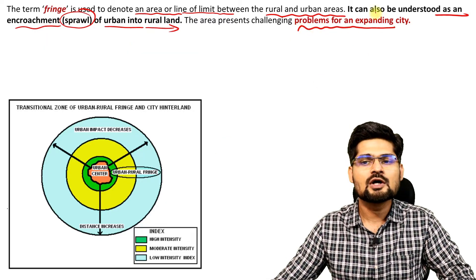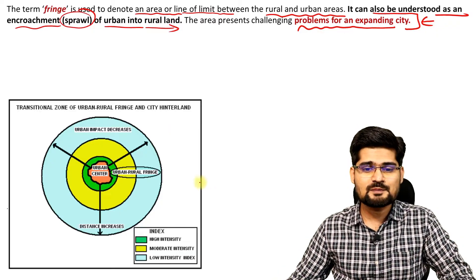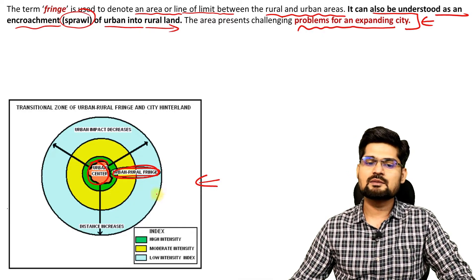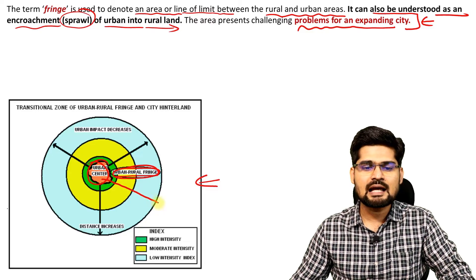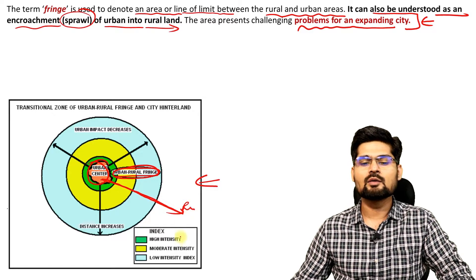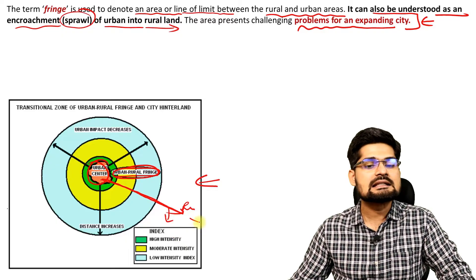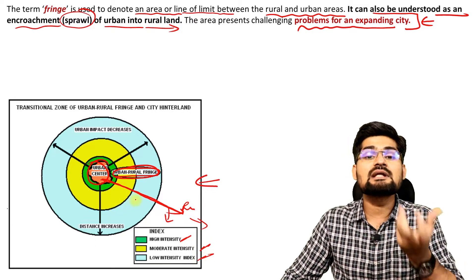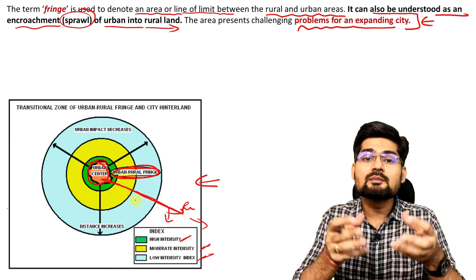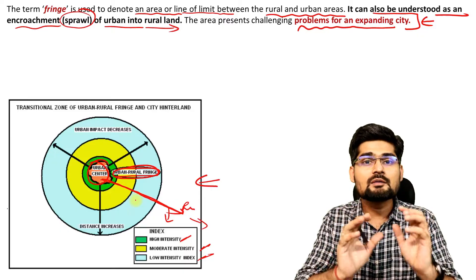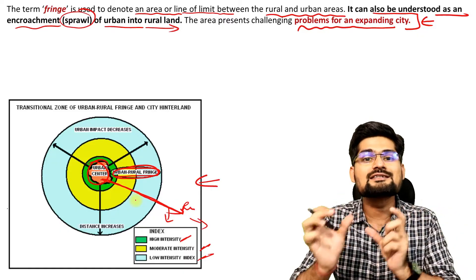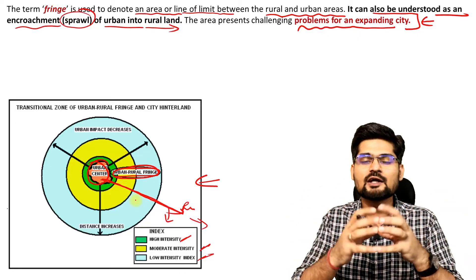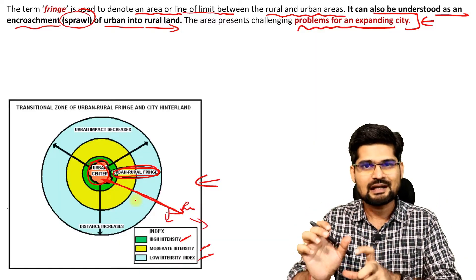We talk about the fringe when we talk about problems of the expanding city. The intensity of urbanization decreases as you go away from the core to the fringe to the rural area — it's a high intensity zone, then moderate intensity zone, then low intensity zone. This intensity of urbanization refers to urban services, urban land usage, and the urban way of living, which many times is also called urbanism. When this urban way of life mixes with ruralism — the rural way of life — it becomes rurban, or rural urban fringe.